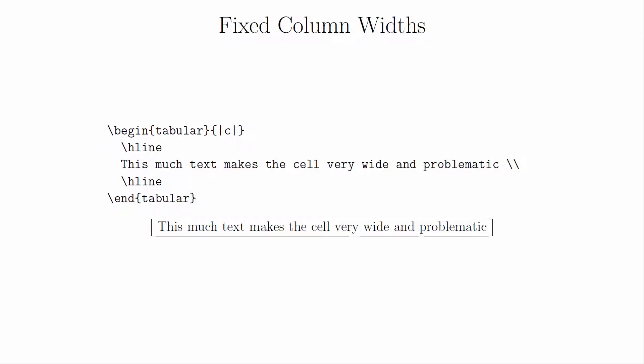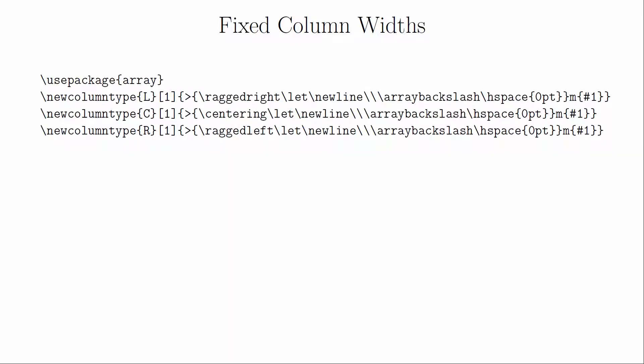For example, if you have lots of text to put into a cell, a fixed column width will cause the text to wrap instead of stretching out the columns to fit the text. One solution for this uses the array package and some custom column types. This is a situation where the explanation for what the code is doing is more complex than is worth understanding at this time. So I'm just going to describe how to use it. If you want to know where this code came from, the link is in the description.